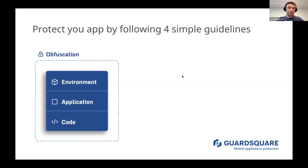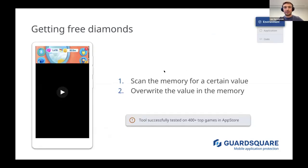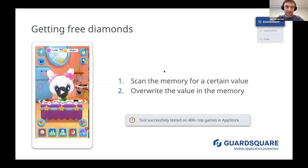The model consists of environment integrity, application integrity, code integrity, and obfuscation. Throughout the whole presentation I'll build that model, and if you build it in your app you can be sure your app will be secure. Let's start from environment integrity.